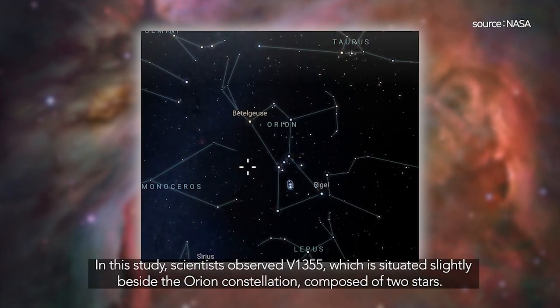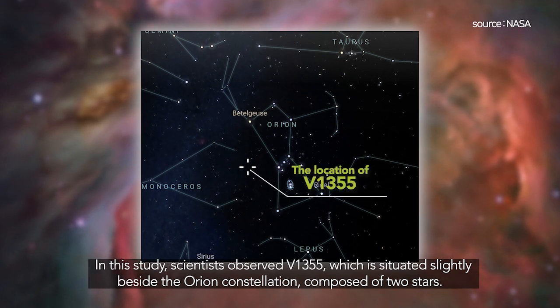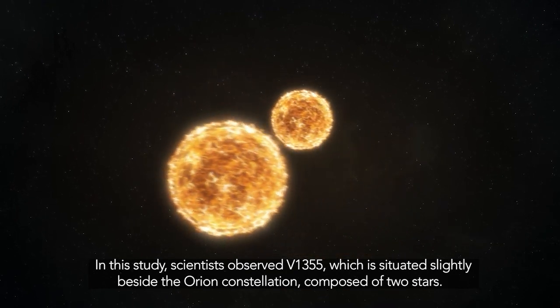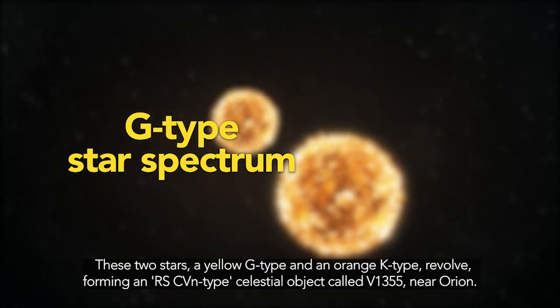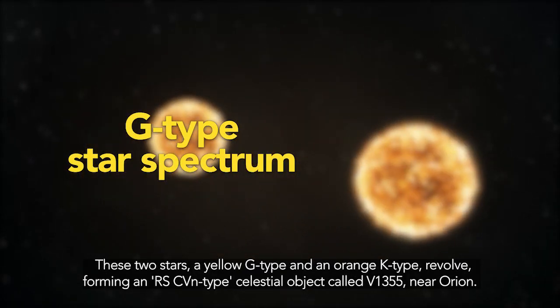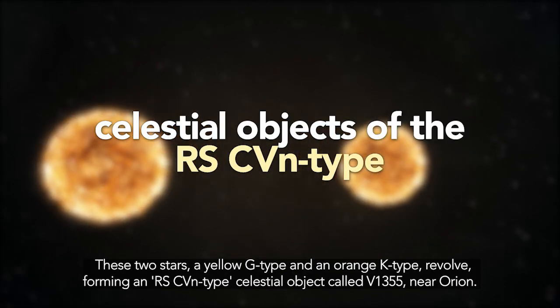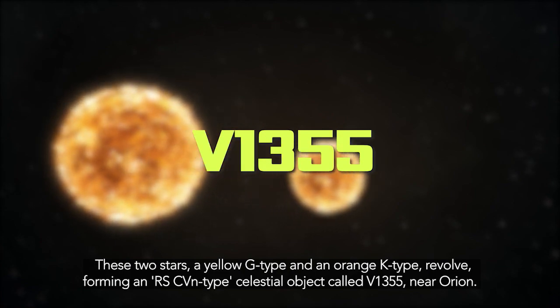In this study, scientists observed V1355, which is situated slightly beside the Orion constellation, composed of two stars. These two stars, a yellow G-type and an orange K-type, revolve, forming an RSCVN-type celestial object called V1355 near Orion.